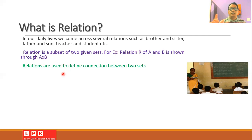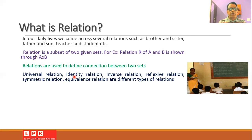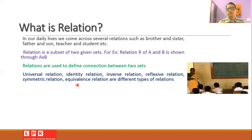Whenever there is a connection between two sets, this connection can be described using a relation. There are different types of relations such as universal relation, identity relation, inverse relation, reflexive relation, symmetric relation, and equivalence relation. Whenever we are able to define a relation between two sets, there can be a variety of types of relations.